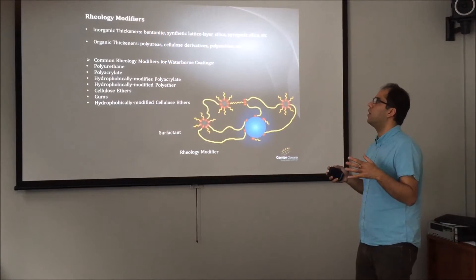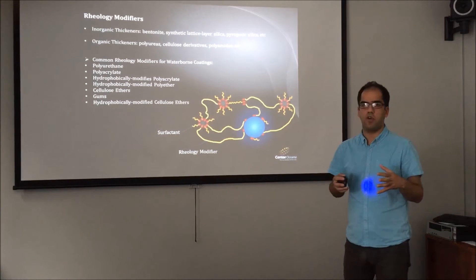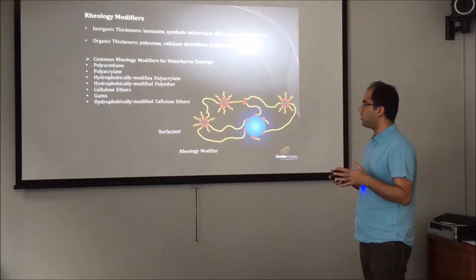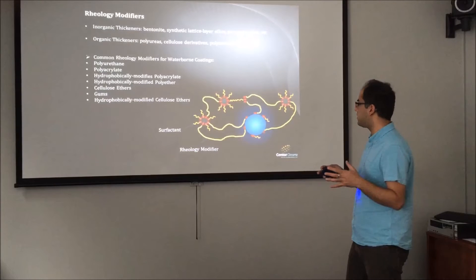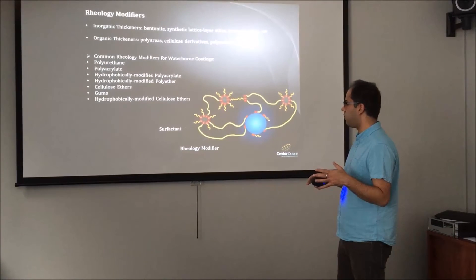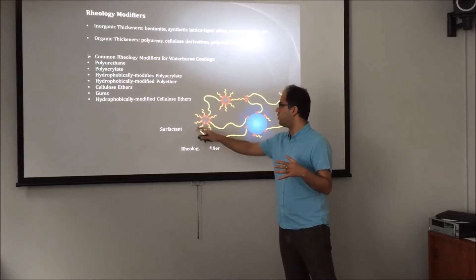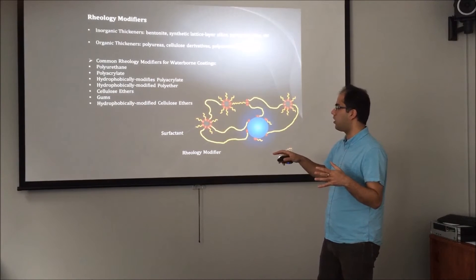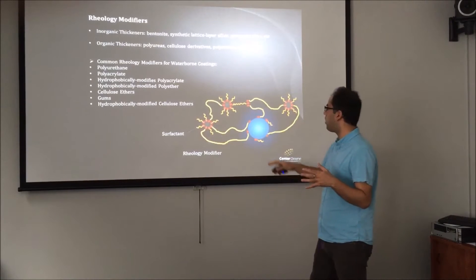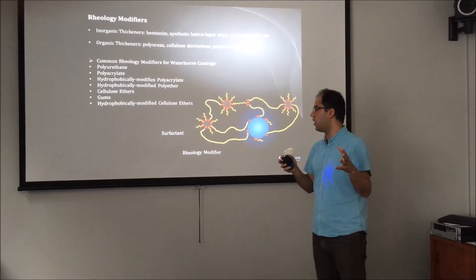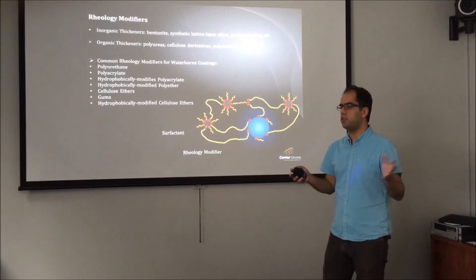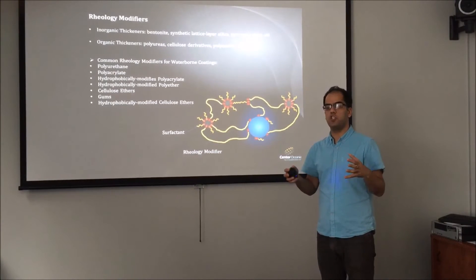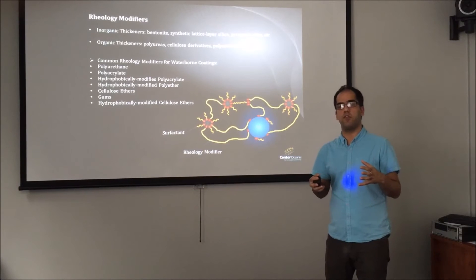The next component in seed coating formulation is the rheology modifier. A rheology modifier creates a 3D network in the formulation and modifies the viscosity of the system. This schematic shows surfactants and rheology modifiers in the system: the rheology modifier molecules interact with themselves, with the surfactants, and with the particles, creating a 3D network. This network improves the suspension of the system and changes the rheology and viscosity of the formulation.